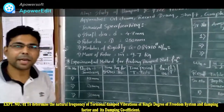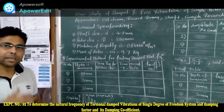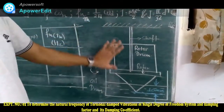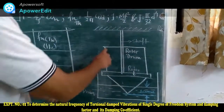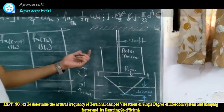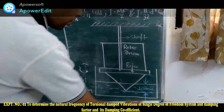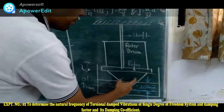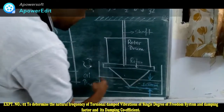Let us look at the apparatus diagram first, and then we'll go to the physical experimental setup. This is a single rotor system. The shaft is shown, and above the rotor there is a rotor drum over which we place the stylus equipment to draw the graph. There is also an oil drum in which oil is situated.